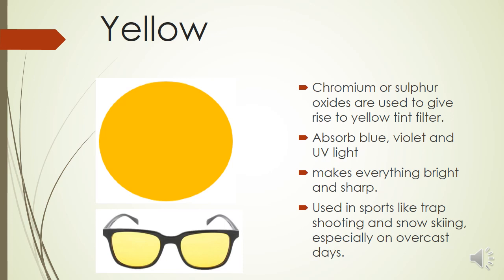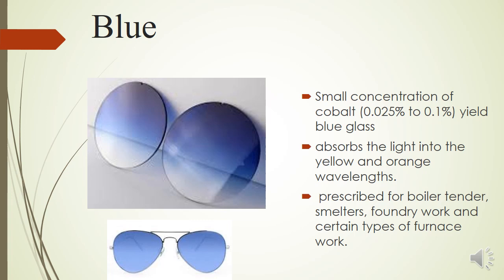The yellow filter is achieved by tinting, or in glass by adding chromium or sulfur oxide into the material. It absorbs blue and violet light — the shortest spectrum, roughly 300 to 400 nanometers — making the environment appear brighter and enhancing contrast. On dull or overcast days, a yellow filter provides better vision than other tints. Because of this contrast-enhancing ability, it is used in sports like trap shooting and snow skiing, especially on overcast days.